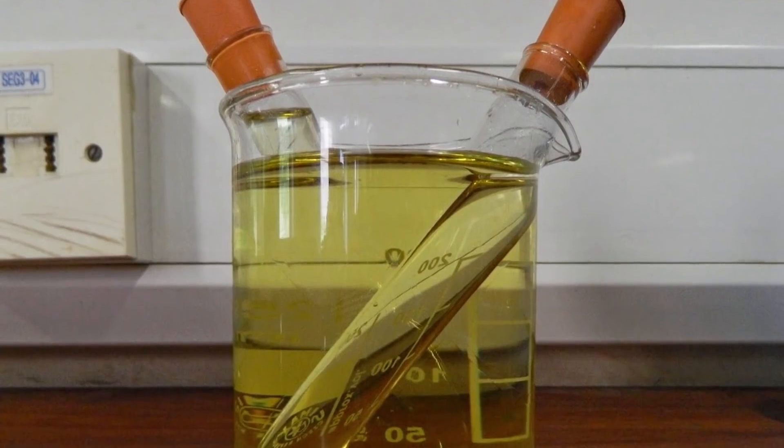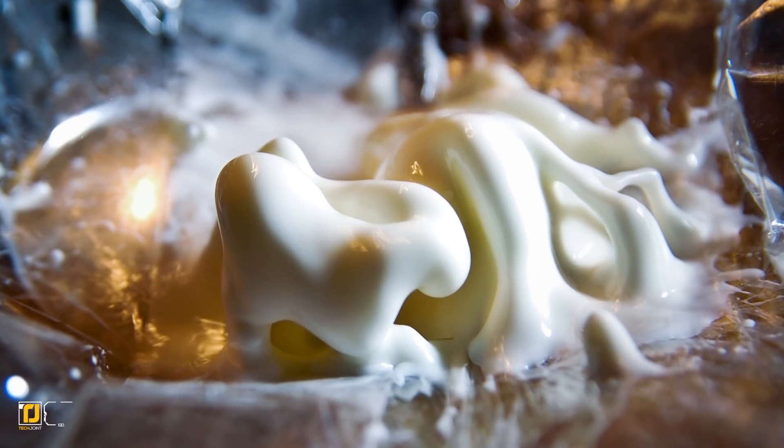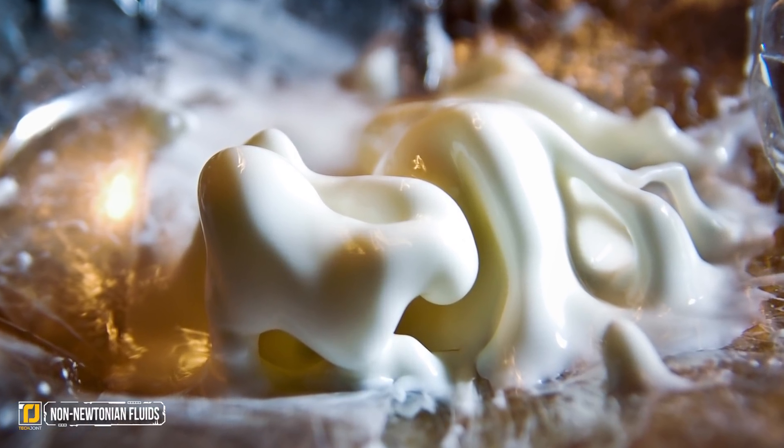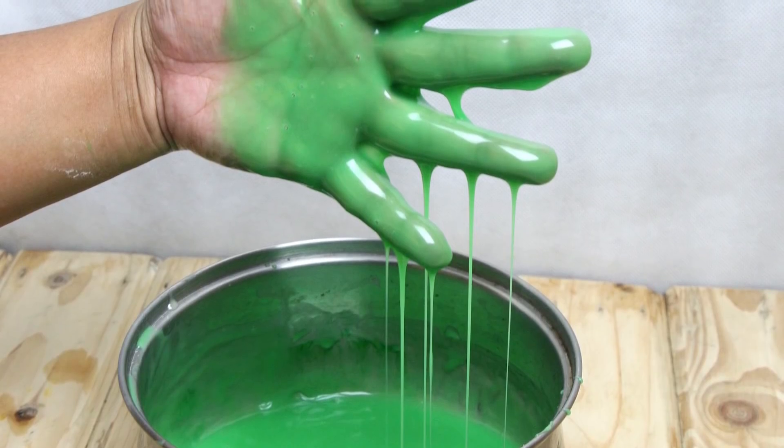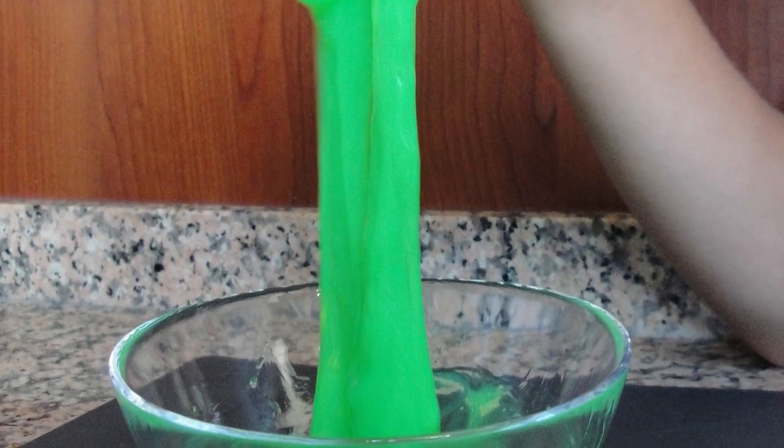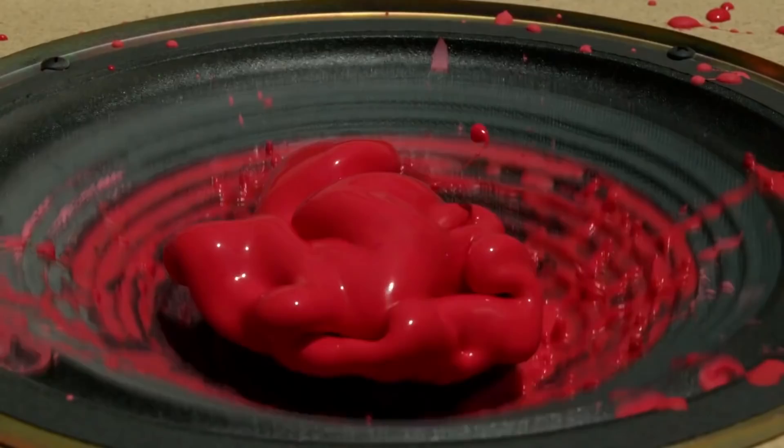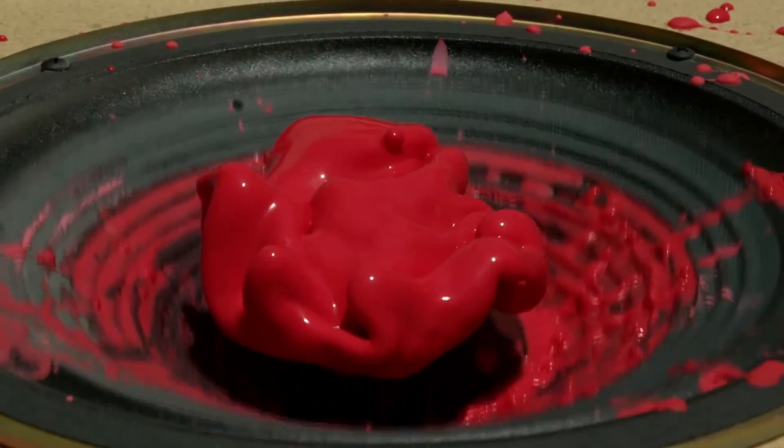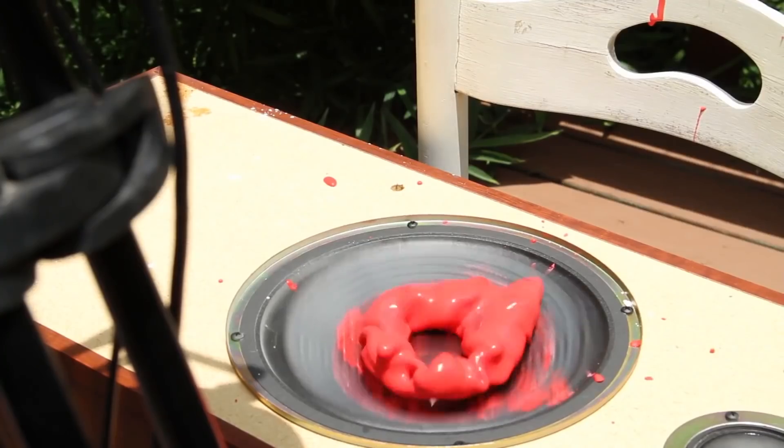Number four: non-Newtonian fluids. These materials have unique properties in that they can be both a solid and liquid depending on external inputs. If you introduce vibrations to these materials, they go from being almost totally liquid in nature to being more solid, exhibiting some spooky symptoms.